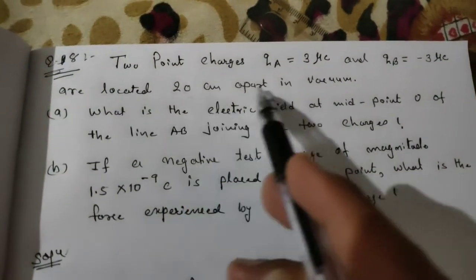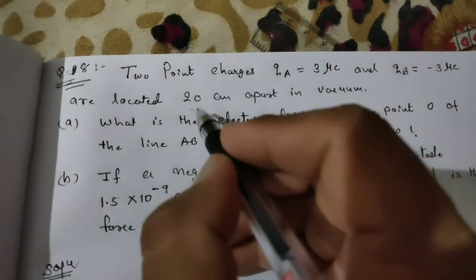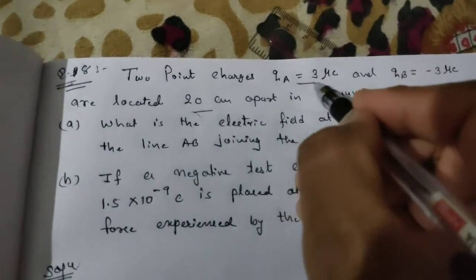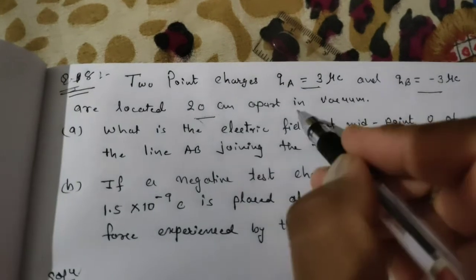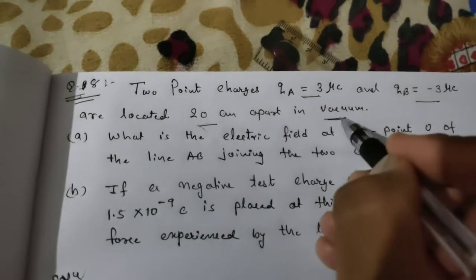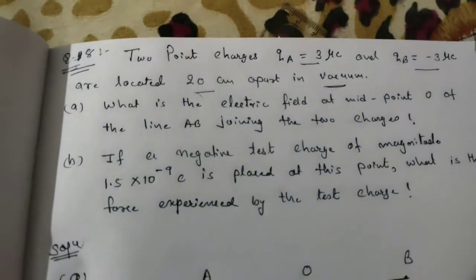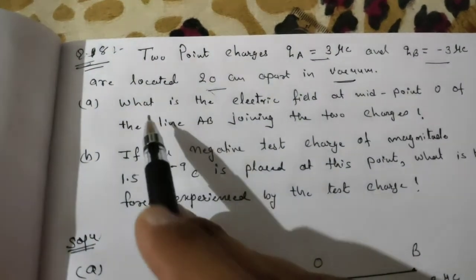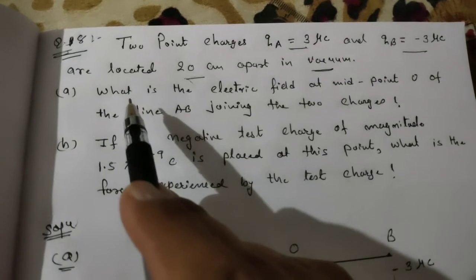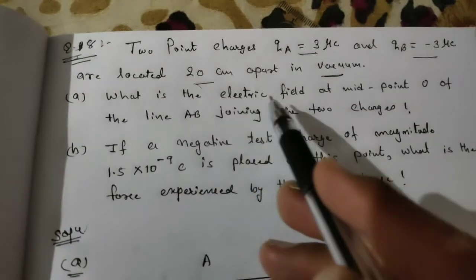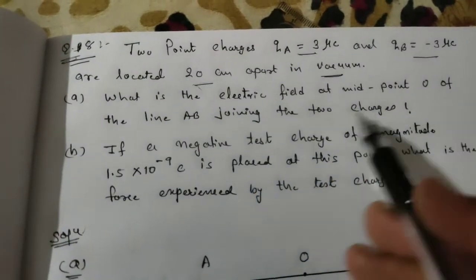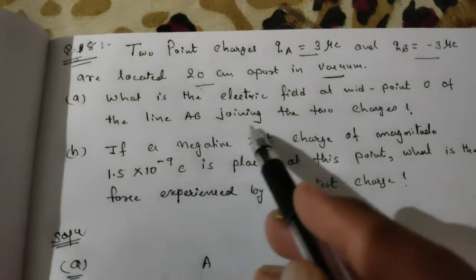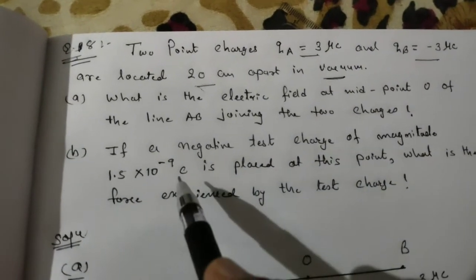Three data are given to us and the entire system is in vacuum. We have two questions in this numerical. First, what is the electric field at midpoint O of the line AB joining the two charges?